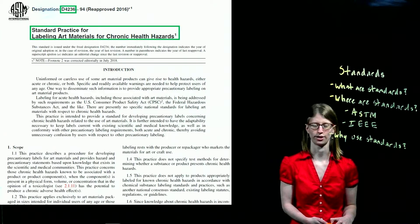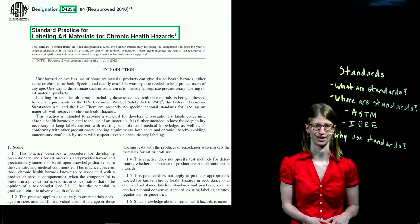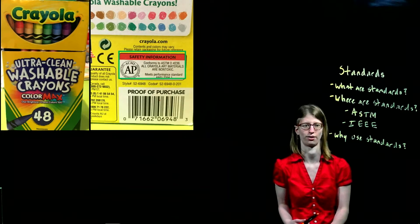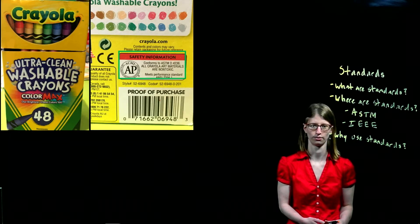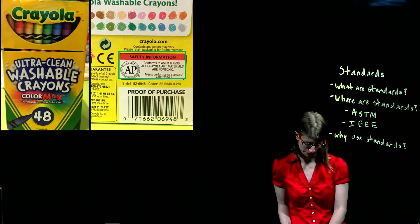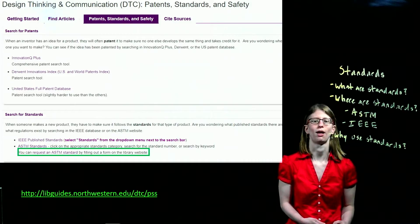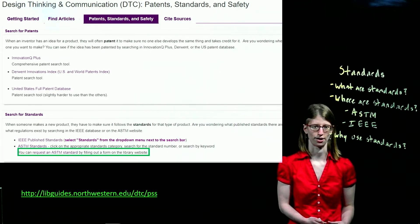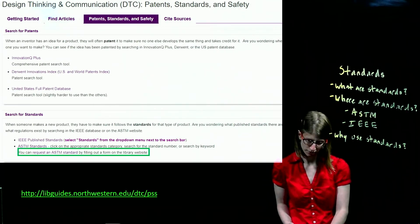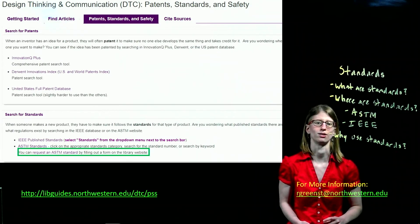You can get some other standards that might be relevant to you. Another example of a product that conforms to a standard is this box of Crayola crayons, which follows the same standard about labeling art materials as the stamp pad. To request an ASTM standard, fill out the form on a library website. For IEEE standards, you can download them from the database directly. For more information, you can send me an email.